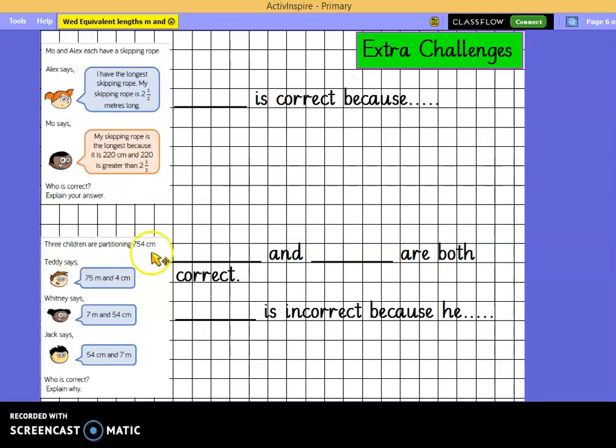Here, three children are petitioning 754 centimetres. Teddy says, it's 75 metres and 4 centimetres. Whitney says, 7 metres and 54 centimetres. Jack says, 54 centimetres and 7 metres. Who is correct and why? Here's something to help you. One person and another person are both correct. You need to record that sentence. And then you need to tell me who is incorrect and why. We'll finish your sentence. Good luck with that. And I'll see you for tomorrow's learning. Goodbye.